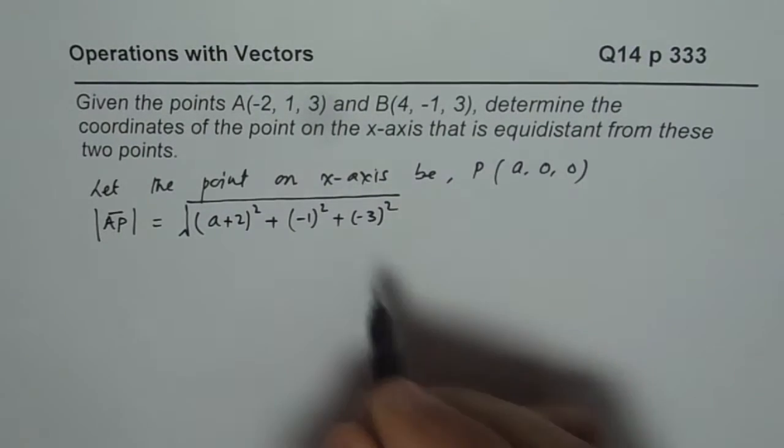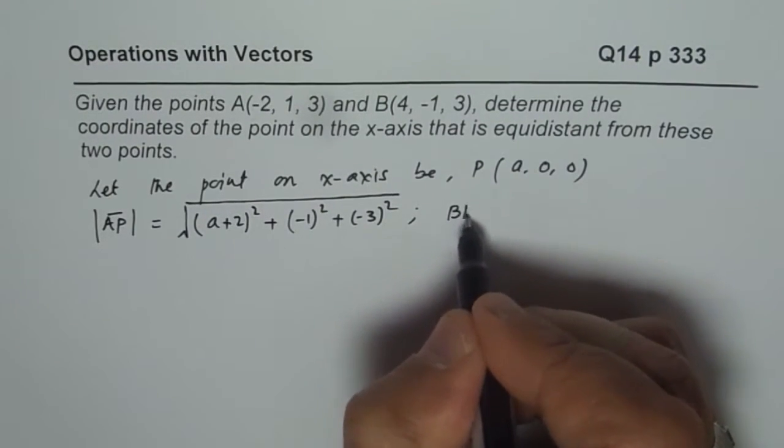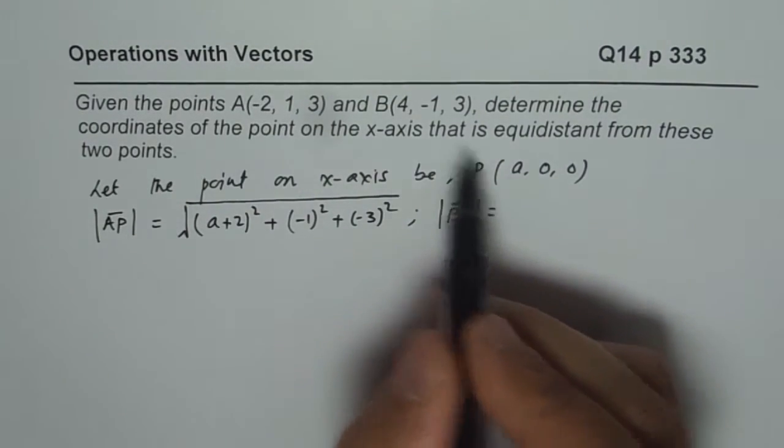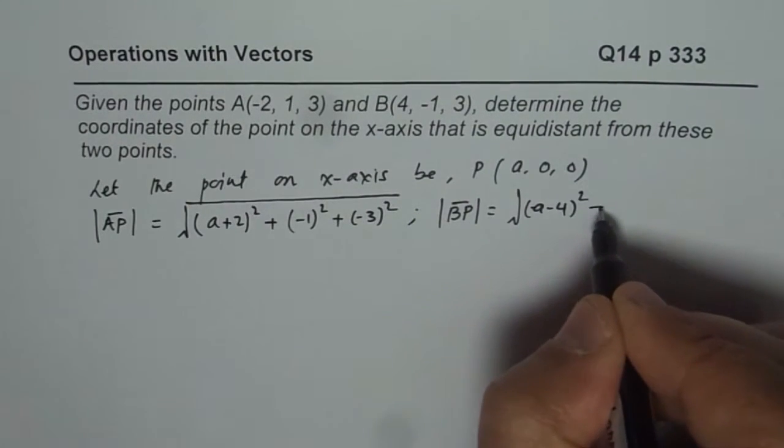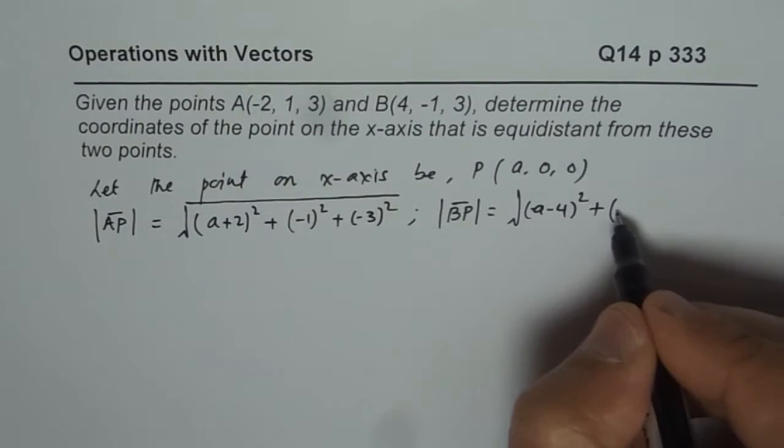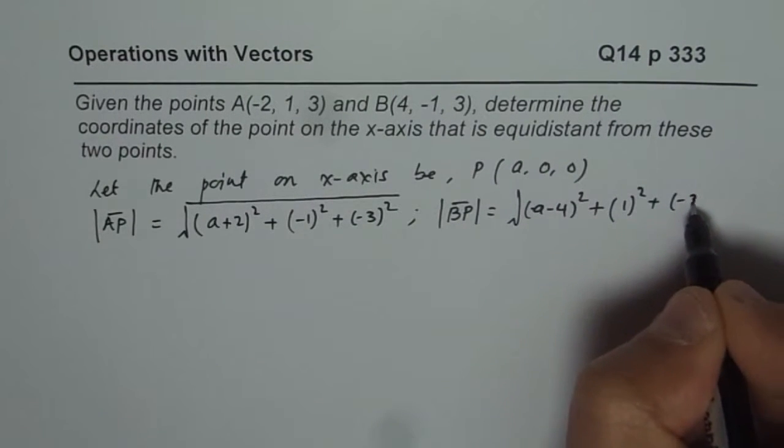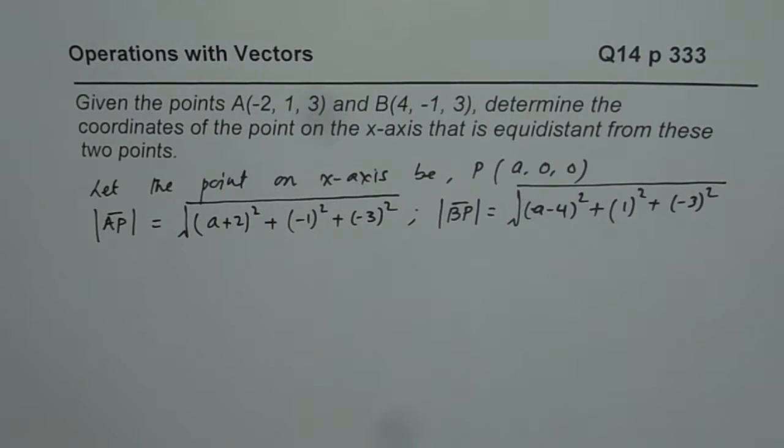Similarly, we need to find what is BP. So BP, square root of (a - 4)² plus (0 + 1)² plus (0 + 3)². That is what the condition is.